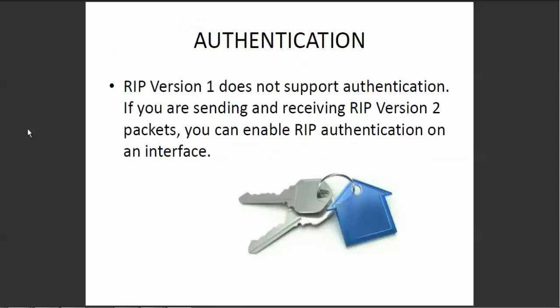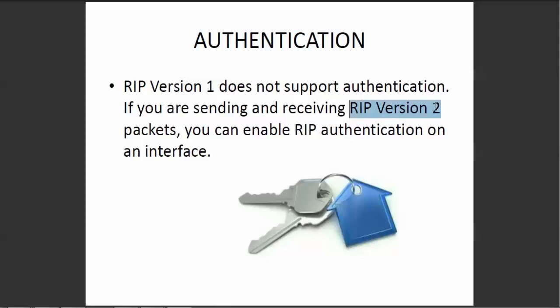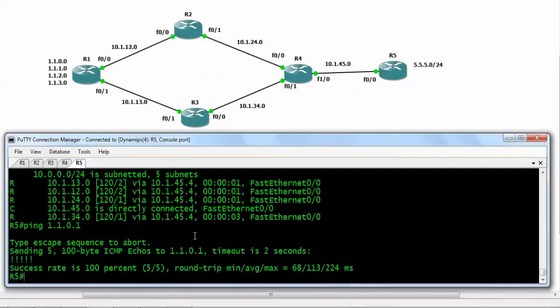Let's move to the next section: authentication. Authentication can only be done in RIP version 2 using two methods — it can be clear text or encrypted using MD5. Let's do the first method, clear text. We will configure authentication between router 4 and router number 5. Before doing authentication, we need to understand the concept of keychains. A keychain is a bundle of many keys, and each key is associated with particular times and key IDs.